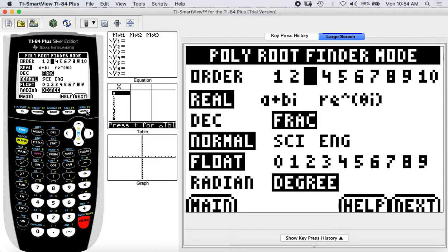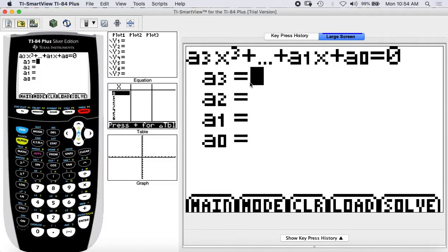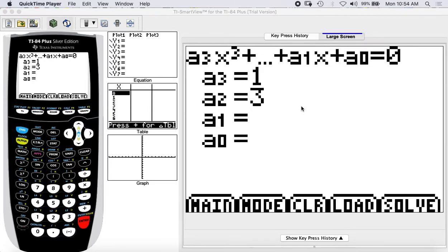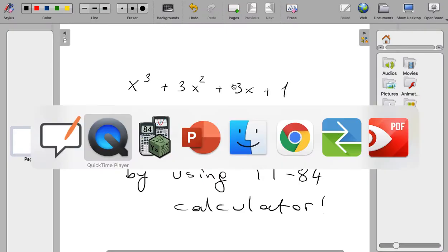I will click this to activate and then I will write the coefficients, which was x cubed, so it is one. And then it was 3x squared, so let me check the question: 3x squared plus 3x.